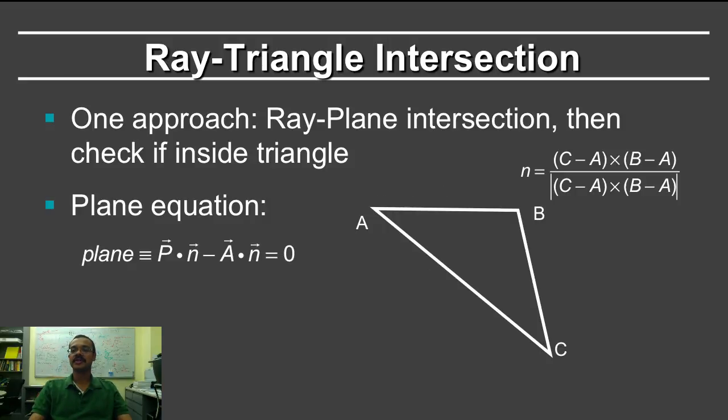The plane equation essentially says that the normal dot product with any tangent vector in the plane, so p - a is a tangent vector, is equal to 0. That can also be written in this form, that the dot product of any point with the normal is the same as the dot product of any other point, such as the vector a.